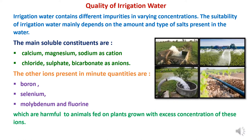Quality of irrigation water. Irrigation water contains different impurities and concentrations may vary depending upon situations. The suitability of irrigation water depends on amount of salts and types of salts present. In water, there are many soluble contents which are calcium, magnesium and sodium present in cation form, and chlorine, sulfate and bicarbonates are present in anion forms.